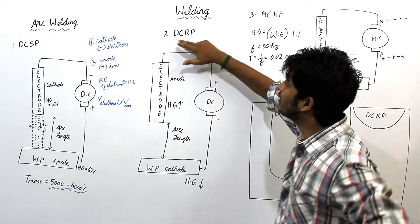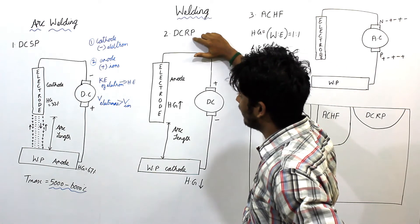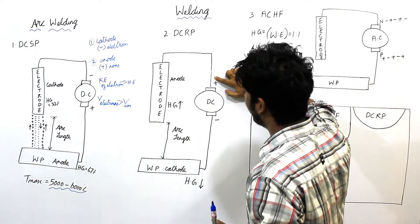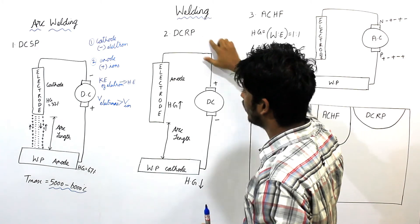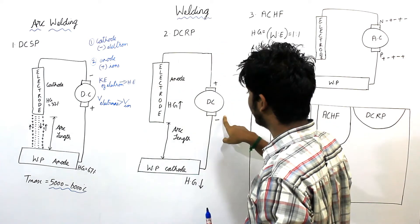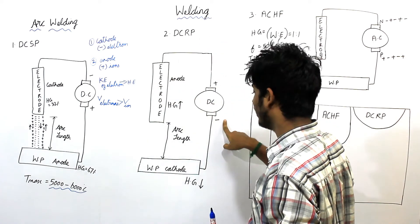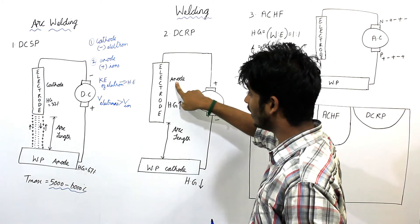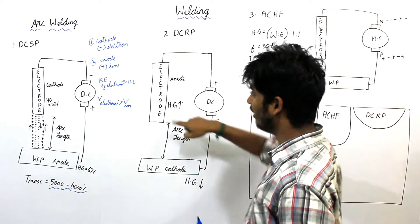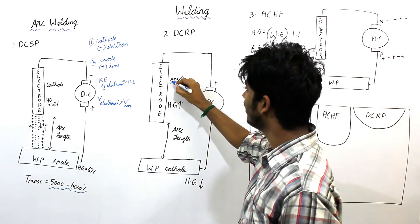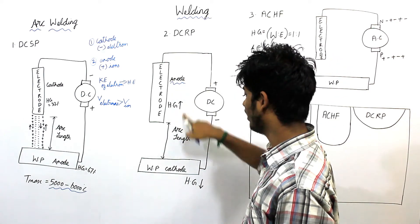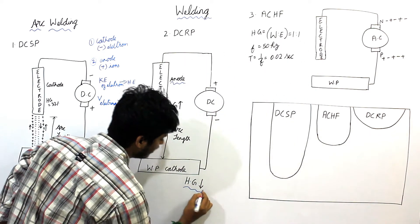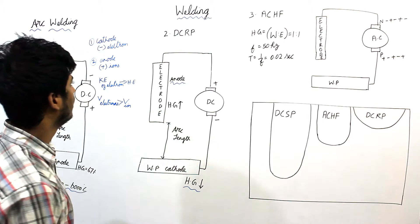Second is direct current reverse polarity (DCRP). Same principle, but here the positive terminal of the power supply is connected to the electrode and the negative terminal is connected to the cathode (workpiece). So wherever there is anode, the heat generated is more compared to cathode, and cathode heat generated is less.